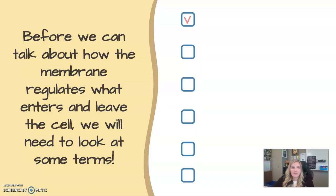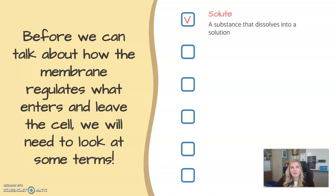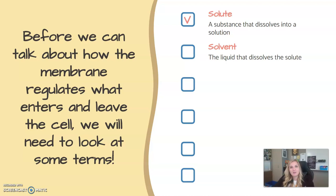Before we talk about how the membrane regulates what enters and leaves, let's look at some terms. A solute is a substance that dissolves into a solution — like salt or sugar dissolved in water. The solvent is the liquid that dissolves the solute, so water is the solvent while salt is the solute. The solution is the solute and solvent together. For example, Kool-Aid powder is the solute, water is the solvent, and the Kool-Aid you create is the solution.